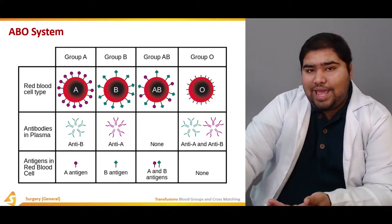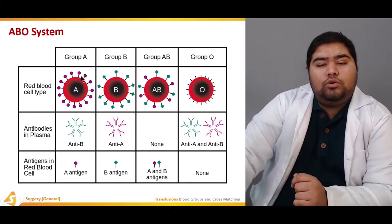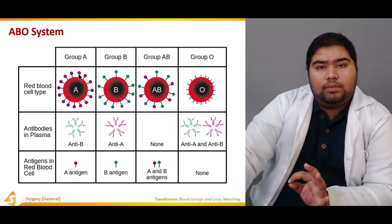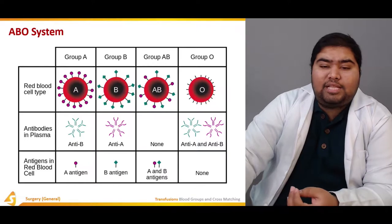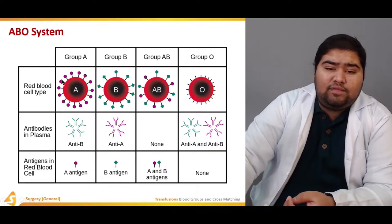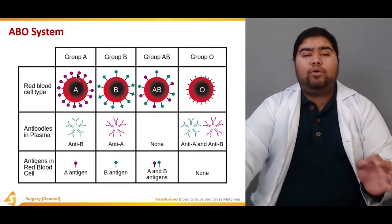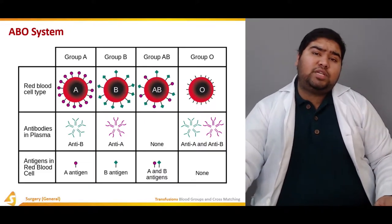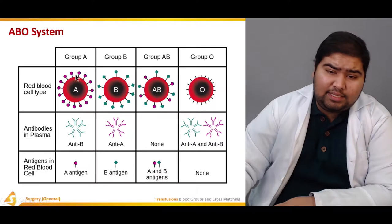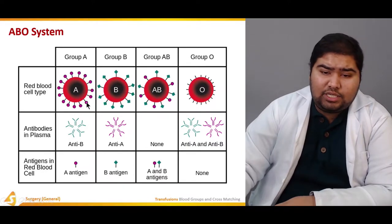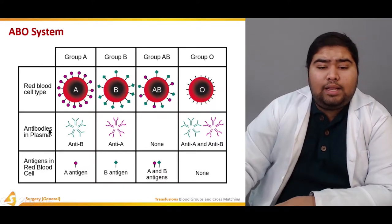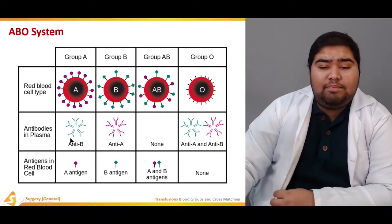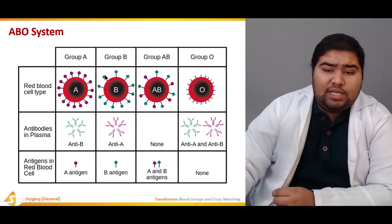The genotype of blood group A can be either AA or AO. Only the A residues are expressed on the glycoprotein surface — A carbohydrate molecules are expressed on the surface glycoproteins of the red blood cells. These are the A antigens, and in the plasma of group A, we already have anti-B antibodies.